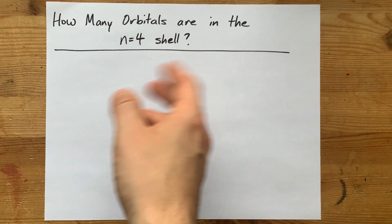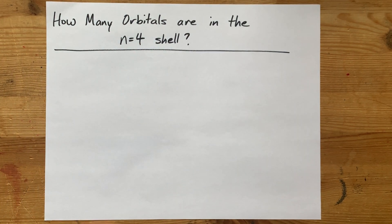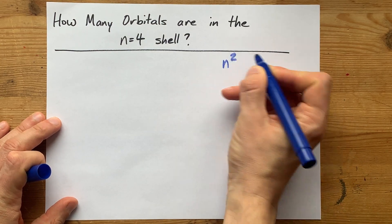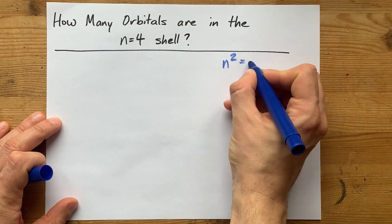How many orbitals are in the n equals 4 shell of an atom? Well, the shortcut to figure that out is just take the n and square it.